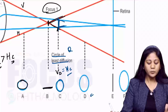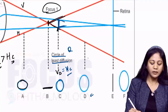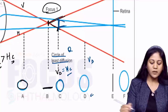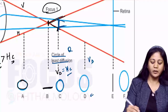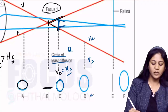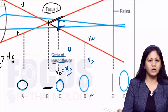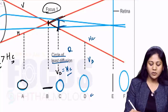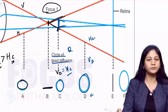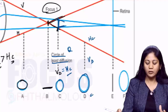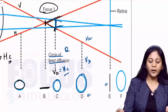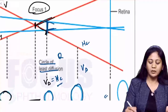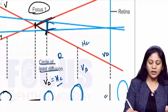At point D, the vertical divergence is much greater compared to the horizontal convergence, so the resulting image is a vertical oval.